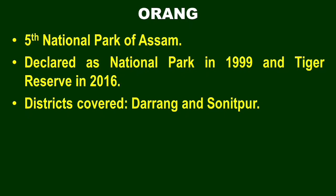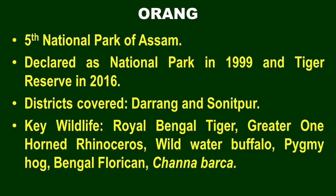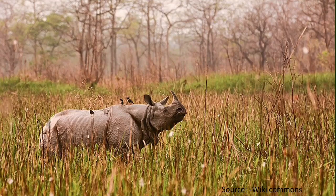Orang National Park spans two districts. The main wildlife includes Royal Bengal Tiger, Greater One-horned Rhinoceros, wild elephant, pygmy hog, Bengal Florican — a very important species — as well as Barking Deer and Sambar. This photograph shows a typical national park landscape.